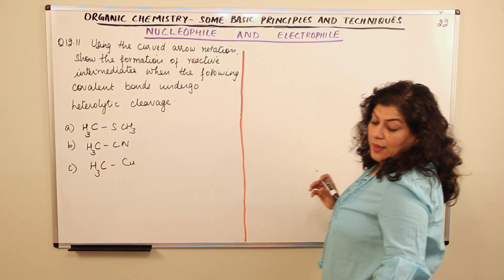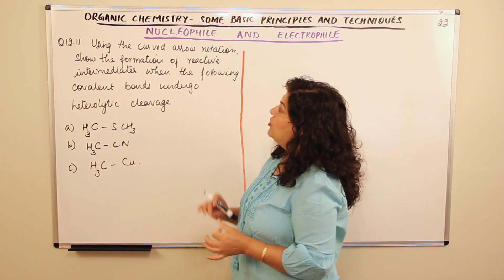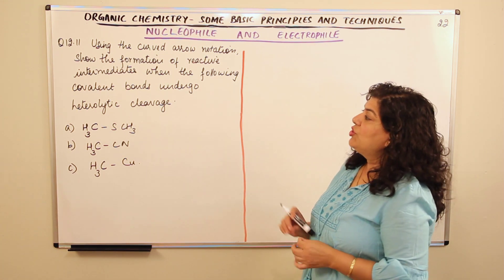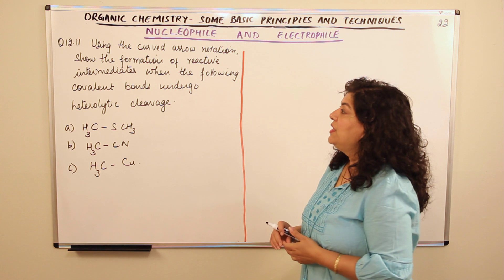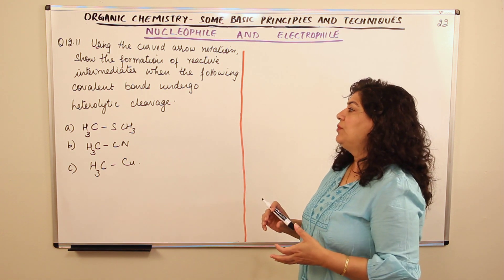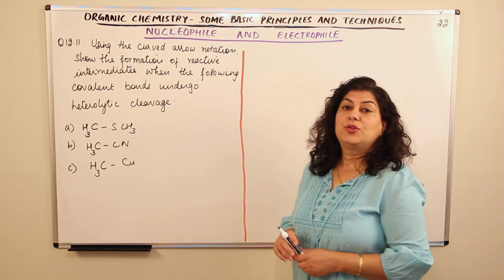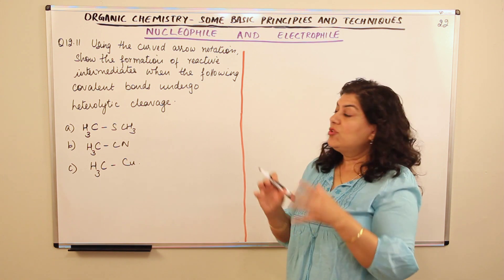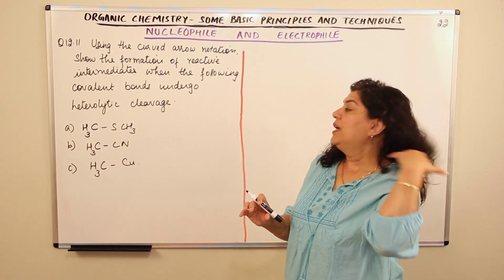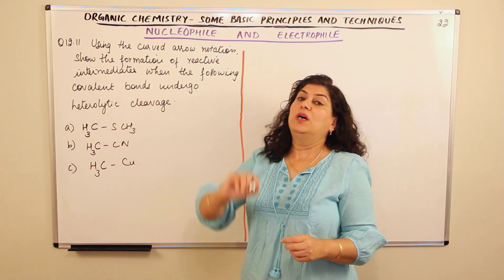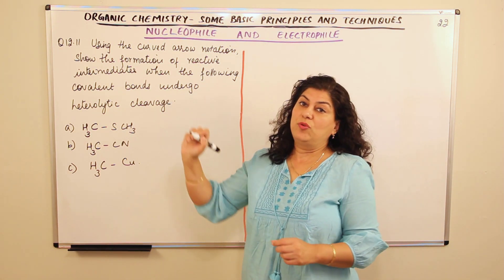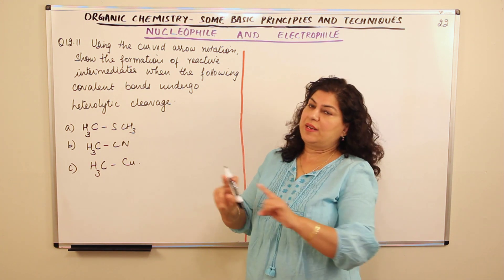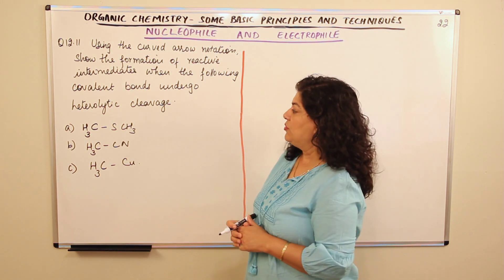In this question, you have to use the curved arrow notation to show the formation of reactive intermediates when the following covalent bonds undergo heterolytic cleavage. In heterolytic cleavage, we show a full curved arrow, while in homolytic cleavage, we use half arrows.